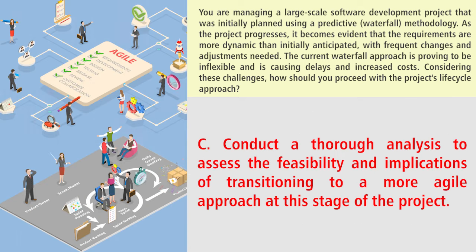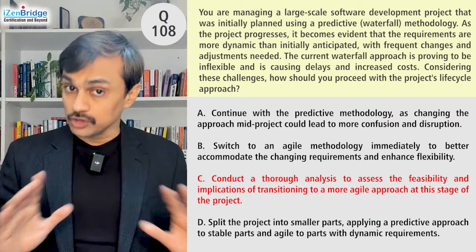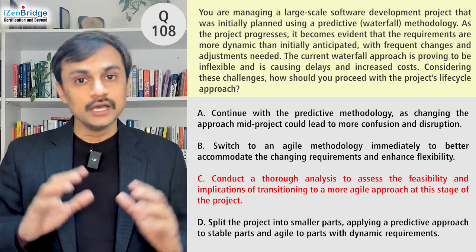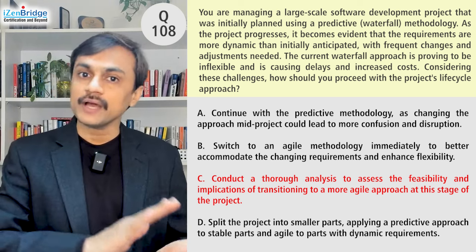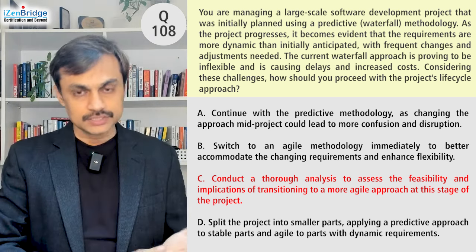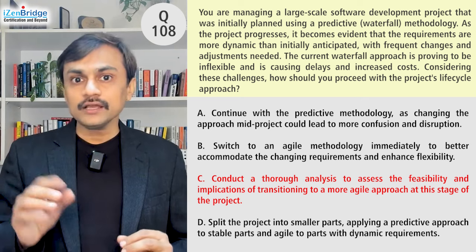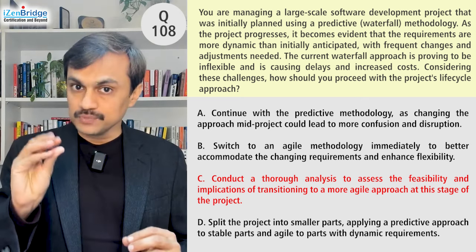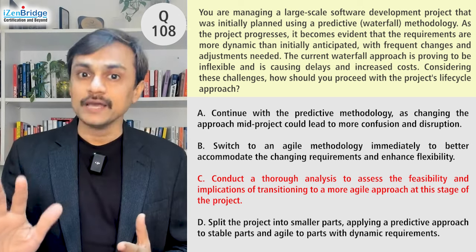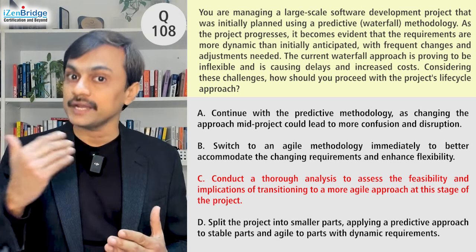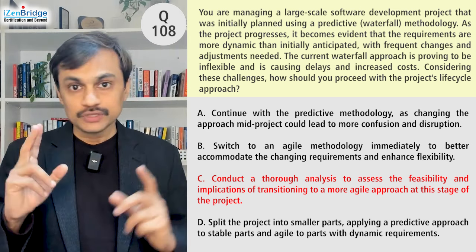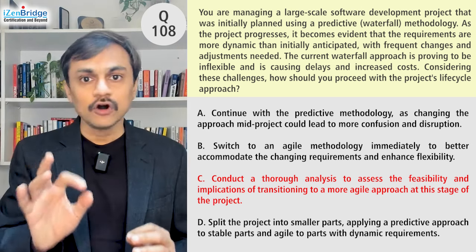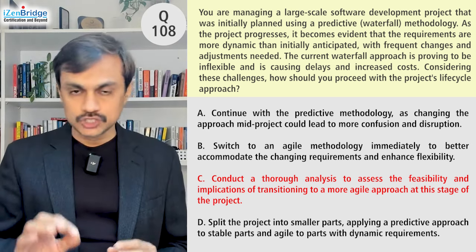Option C: conduct a thorough analysis to assess the feasibility and implications of transitioning to a more agile approach at this stage of the project. This is a great option for two reasons. First, it gives us an option to analyze and look at various factors. Second, it says 'more agile approach,' which points toward a probable hybrid approach — we are not saying we will go directly to an adaptive lifecycle. With these two key indicators, option C works best in this particular situation.